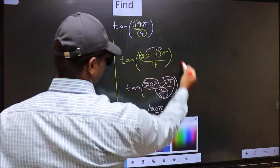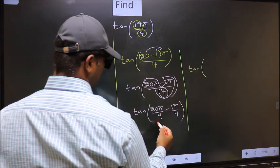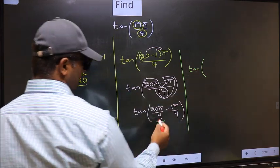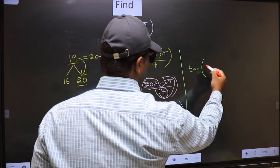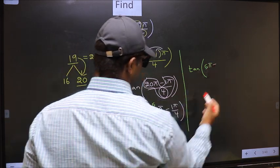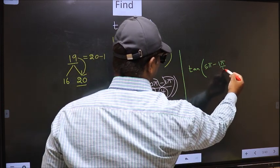Next, tan. Now here you should cancel. 4 1's, 4 5's. So we get 5 pi minus this, no change, 1 pi by 4.